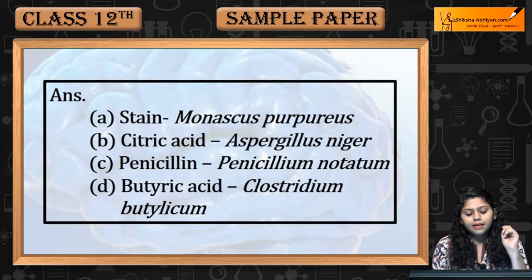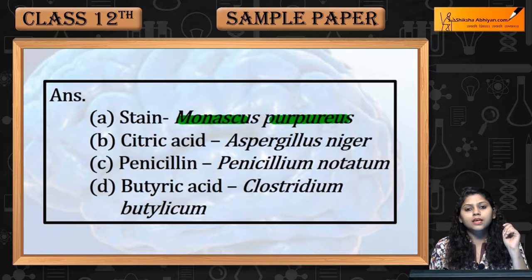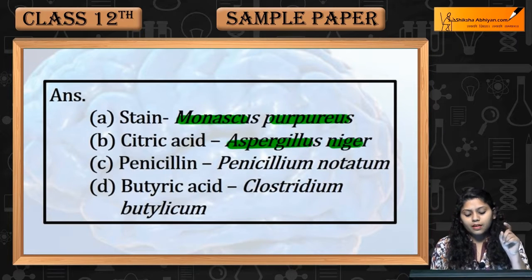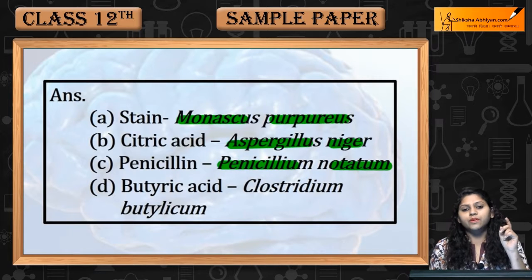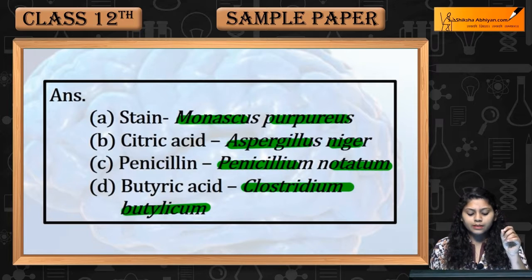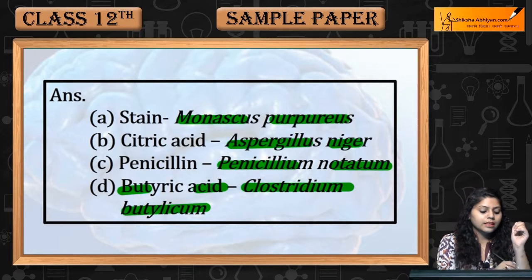Statin — Monascus purpureus. Citric acid — Aspergillus niger. Penicillium notatum for penicillin. Clostridium butylicum for butyric acid.